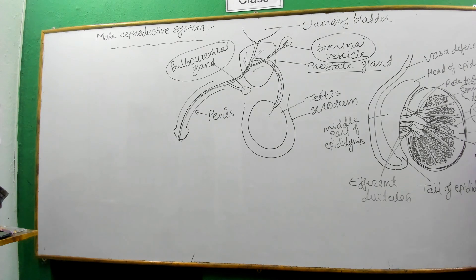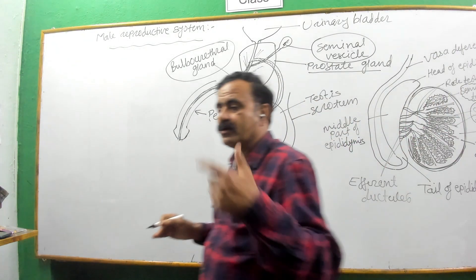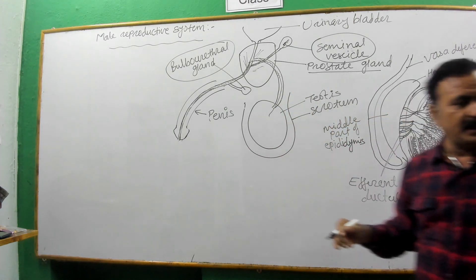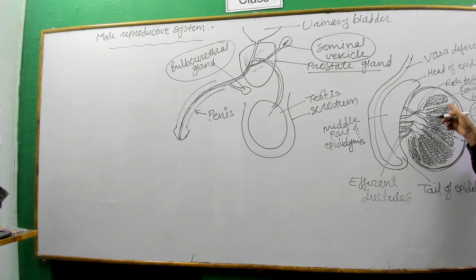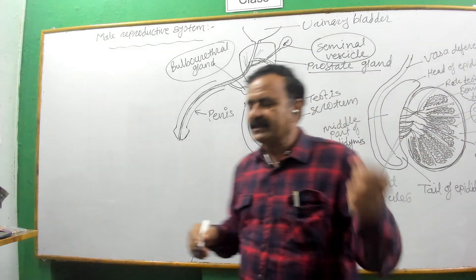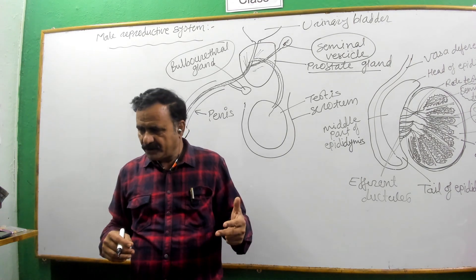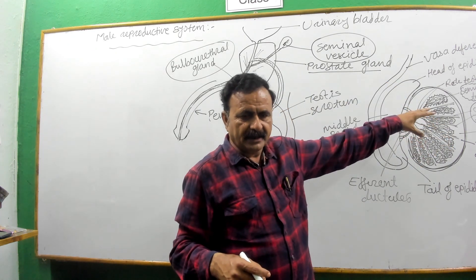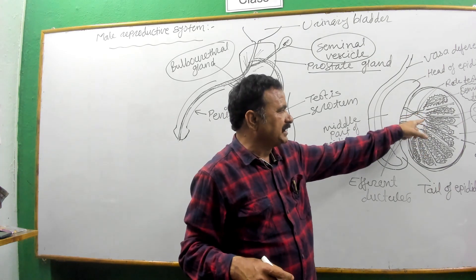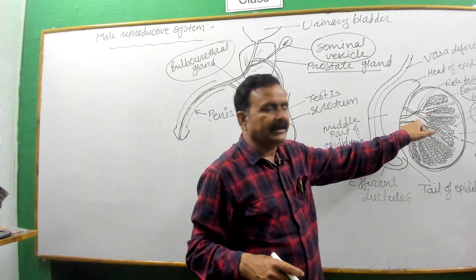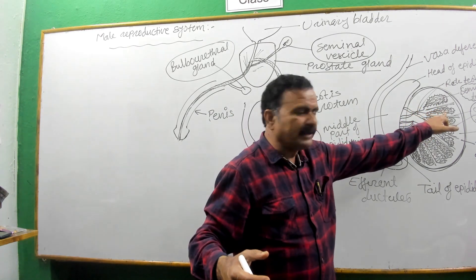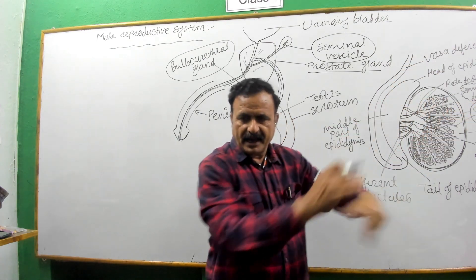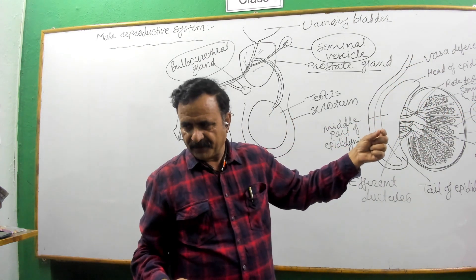The function of the seminiferous tubules is the production of sperm cells — actual sperm cell production takes place inside the seminiferous tubules. The sperm cells produced inside the seminiferous tubules are immature. These immature sperm cells move through the seminiferous tubules, which are interconnected by vessels called the rete testis, and enter into the rete testis.